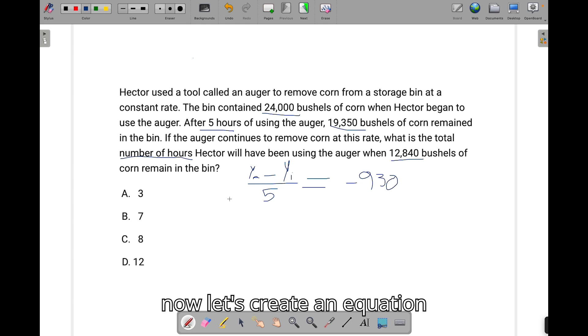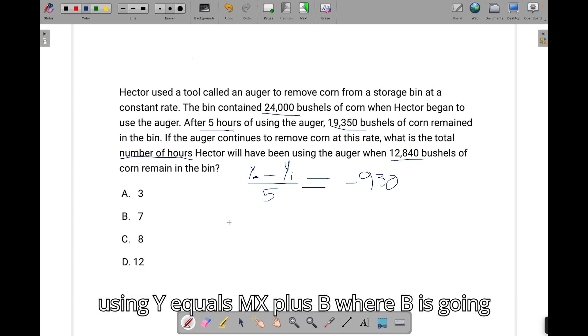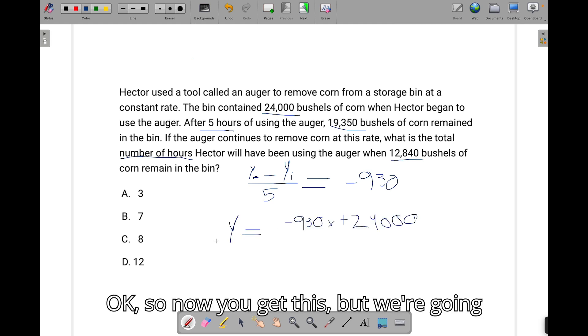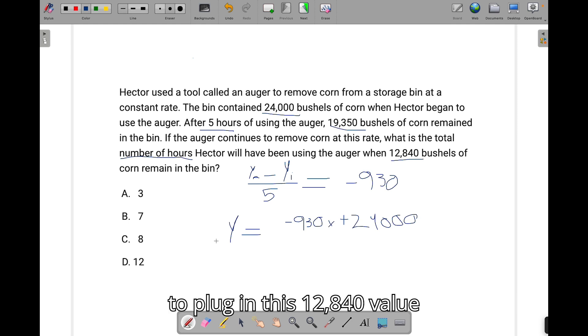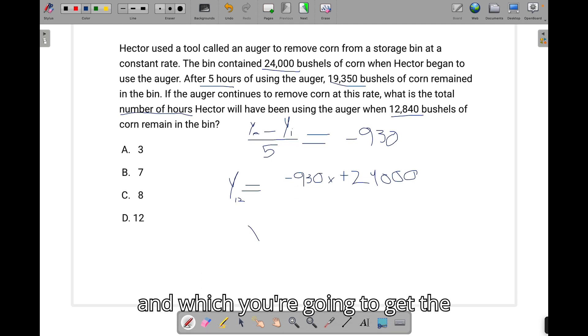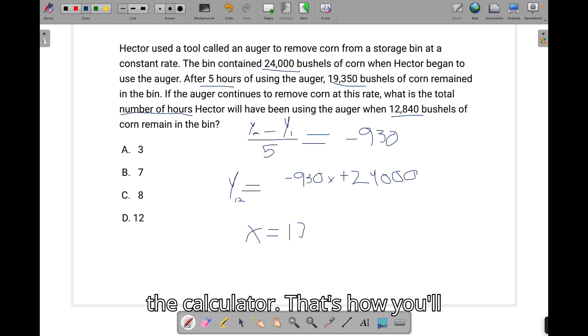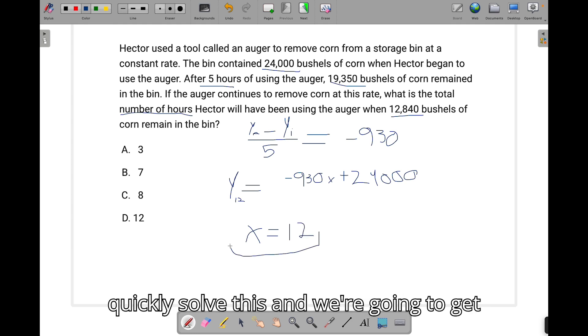And now let's create an equation using y equals mx plus b, where b is going to be that 24,000 bushels of corn. Okay, so now you get this. But we're going to plug in this 12,840 value for our y-value. So now we're just changing this y to y of 12. And from here, it's just algebra. You subtract y of 12 from 24,000, and then divide it by negative 930. And we're going to get the amount of time our x-value is going to be equal to 12, once you plug everything into the calculator. That's how you'll quickly solve this, and we're going to get d.